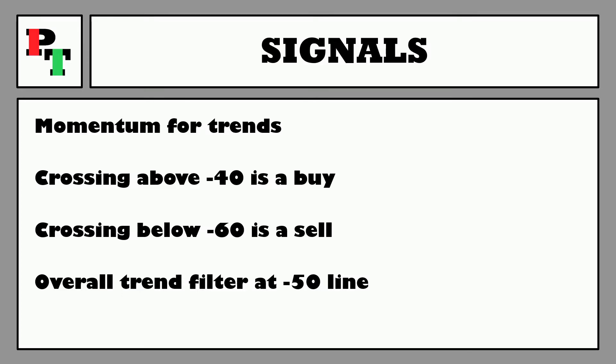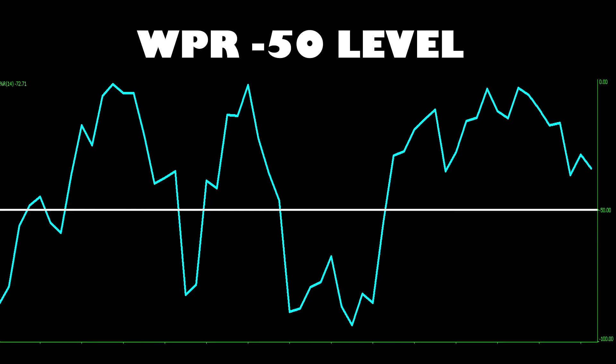It doesn't have to be two levels either — you could just use a single line right at the center, the minus 50 line, as a filter for your other entry indicators. If the Williams Percent Range reading is above minus 50, you only enter buy trades; if it's below minus 50, you only enter sell trades. This would hopefully remove some losing trades from your strategy.